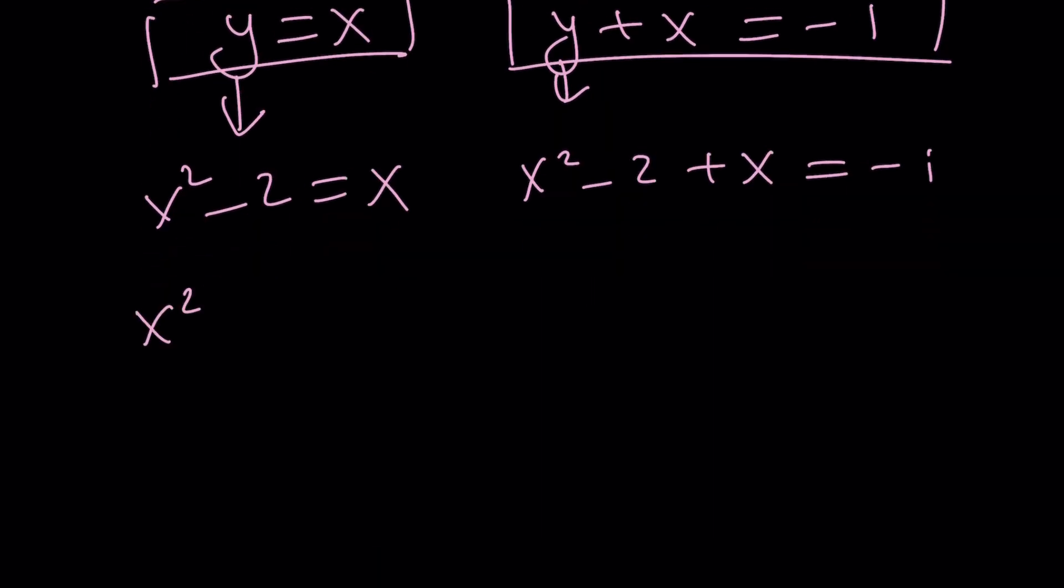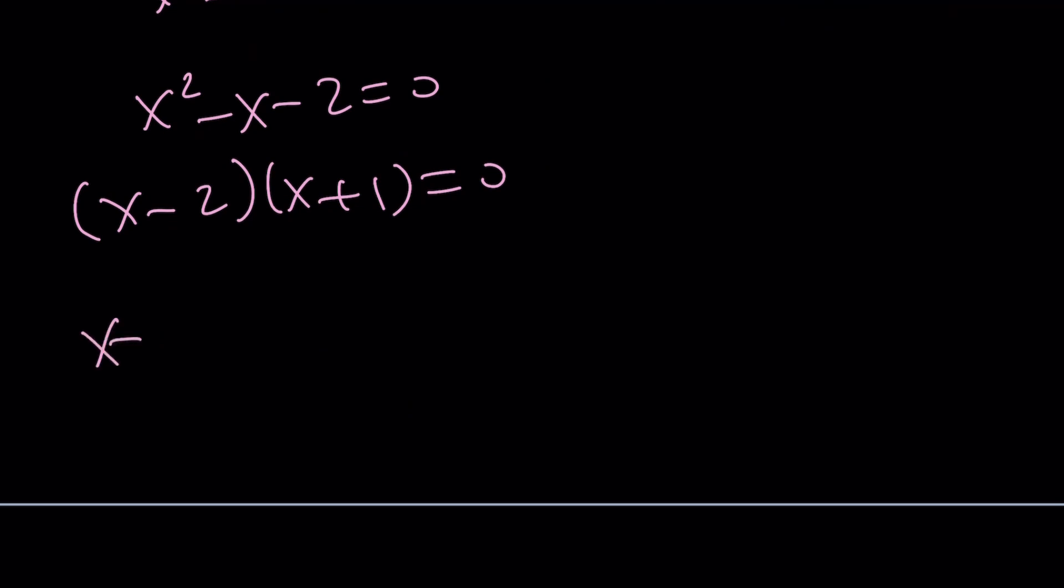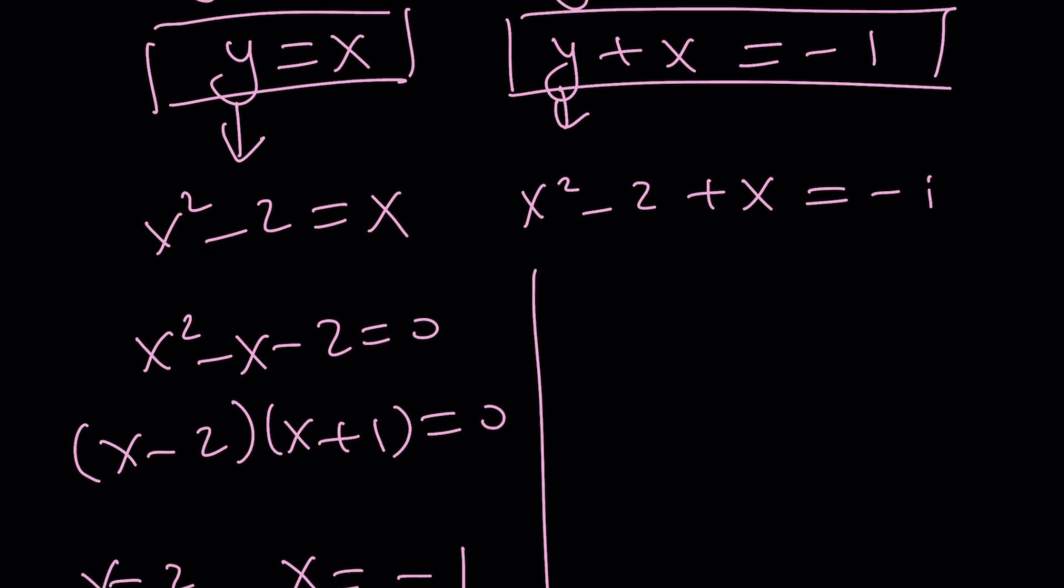This one is going to give me x squared minus x minus 2 equals 0, which can be factored into x minus 2 and x plus 1. And then from here, I get two solutions: x is 2 and x is negative 1. We're going to test both of them. But let's take a look at this one. This one is kind of more interesting.